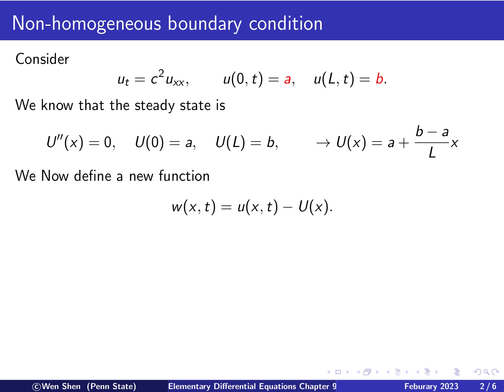And now here comes an important step. So instead of studying this u that satisfies this boundary condition, we're going to define a new function. Let's call it W, defined as the function u of x and t minus the steady state capital U of x. So we extract the steady state from the solution u and call the remaining part W. So why do we do that? Well, that's because W has many nice properties.